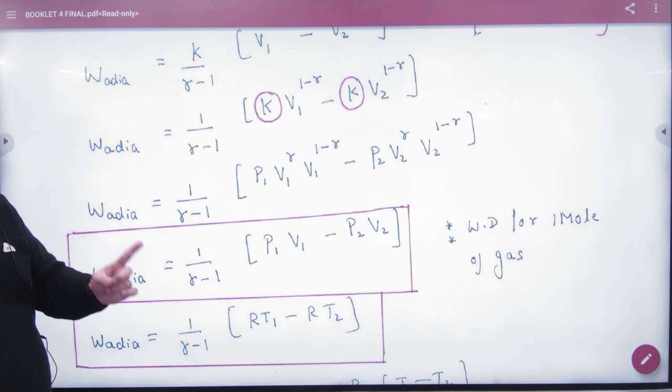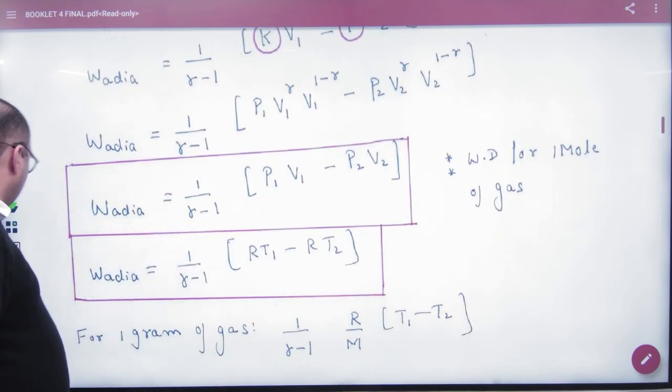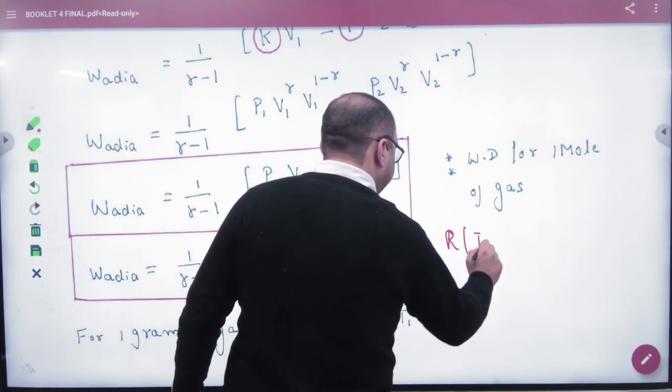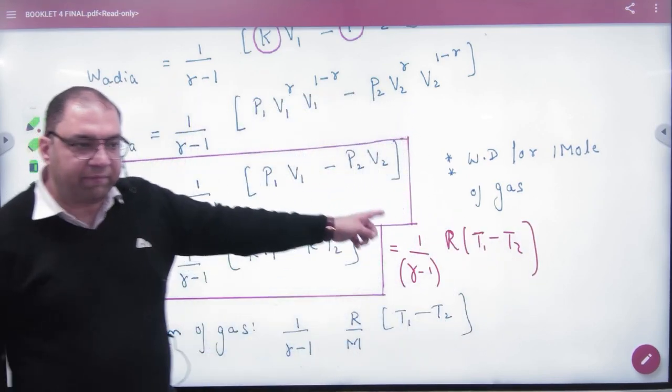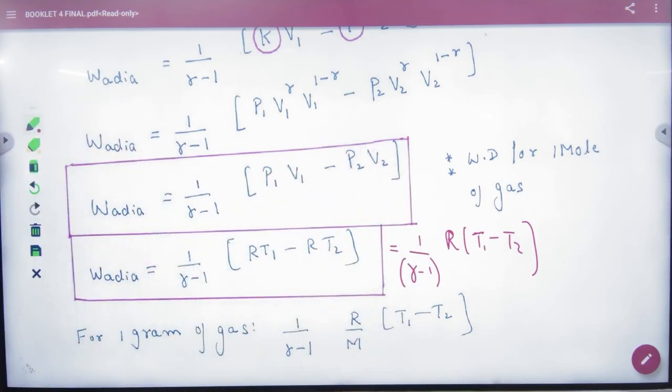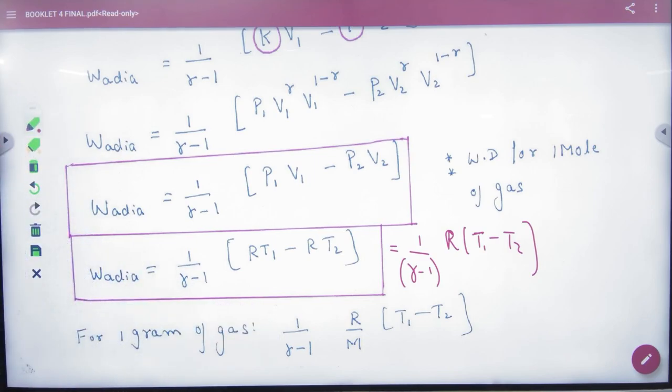For one mole of gas, the formula in adiabatic is - note this. And PV equals RT, note this also. Both formulas note. In adiabatic for one mole, the work done is equal to this. Note this, and this is important. T1 is first, T2 is after. P1 V1 is first, P2 V2 is after. Initial minus final. Not final minus initial. Note both these formulas. For n moles, multiply by n. If one gram came, divide by molecular mass.